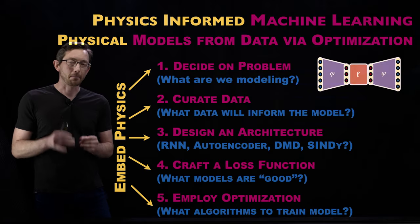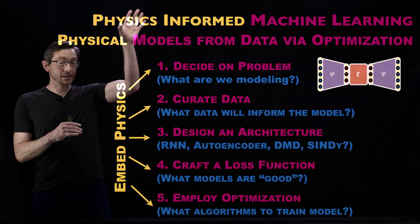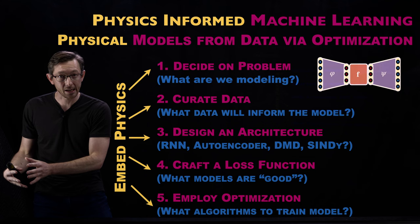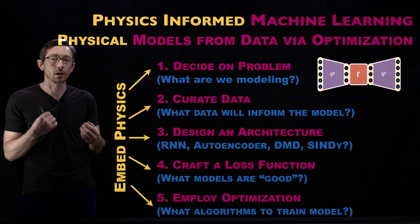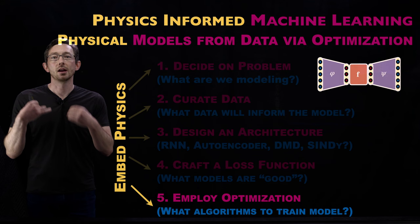Welcome back. We are in this intro sequence on physics-informed machine learning, this super important and exciting intersection between the physical sciences and this emerging set of machine learning optimizations. We've gone through the five stages of machine learning and how each of these stages gives an opportunity for embedding physics into the process. Today we're going to talk about this fifth stage: actually employing an optimization algorithm to train the machine learning model.